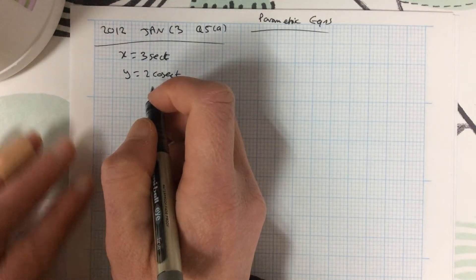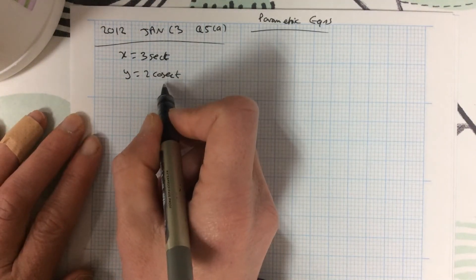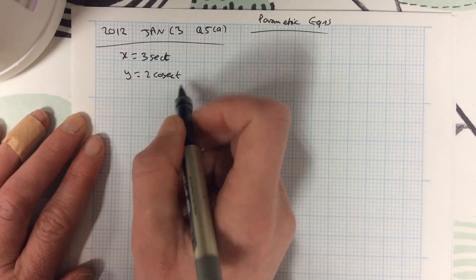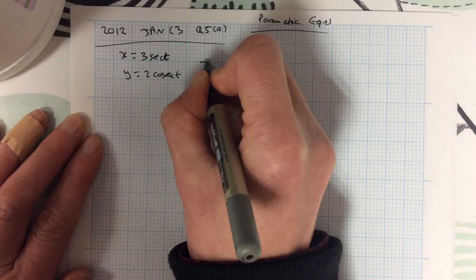Okay, so let's have a look at this one here. So we're trying to eliminate this. Now, the link between sec and cosec, I can't think of one. So I'm going to see if I can do it in any other way.